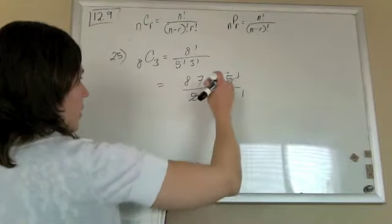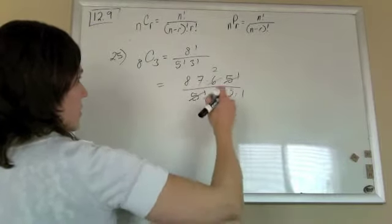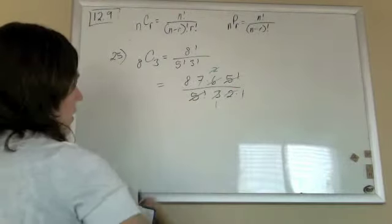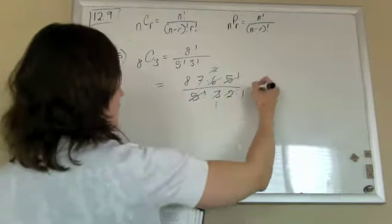Let the 5 factorial cancel with the 5 factorial down there. 3 factorial is 3 times 2 times 1. Divide by 3, I get 1. Divide by 3, I get 2. Let the 2s cancel. 8 times 7 is 56.